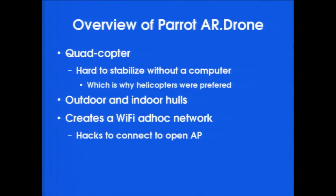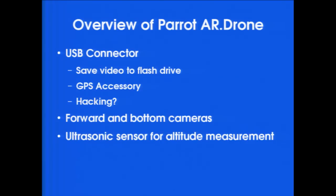It has indoor and outdoor hulls. I've got the indoor hull here — the outdoor one would not fit in my luggage. The indoor one has styrofoam covering over the rotors, so if you bump into anything it's all safe. It creates this little ad hoc network. There are ways you can get it on an open access point, though it won't connect to any kind of encrypted access point at all. On the inside there is a USB connector. The official ways to use that are to save video to a flash drive, and they also sell a GPS accessory that gives you GPS coordinates over the navigation channel. People have thought about attaching Nerf guns and firing using the USB connector, but if it were easy and straightforward it would have been done already.